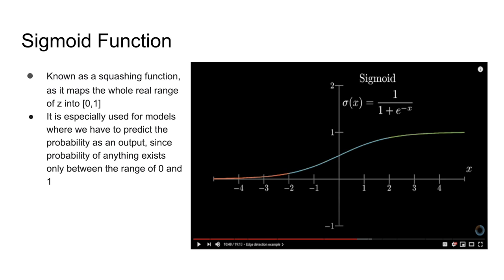Every neural network has an activation function. For this video, I'll be talking specifically about the sigmoid activation function, though there are other activation functions you can use as well. The sigmoid function is known as the squashing function because it maps every real number into the range of 0 and 1 inclusive. The reason people use sigmoid functions is because in probability, every single probability lies between 0 and 1. For example, flipping a coin gives you a 50% chance of heads and 50% chance of tails, and 0.5 is between 0 and 1. So by using the sigmoid function, we can easily calculate probability, which is essentially what the neural network is doing — trying to get the most probable desired outcome as its prediction.